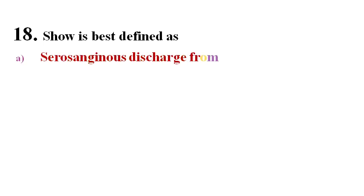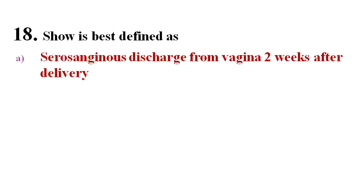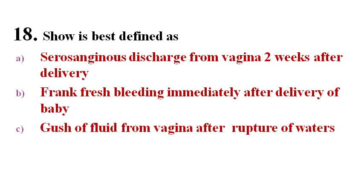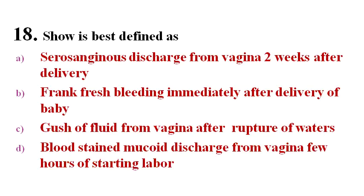Next question: Show is best defined as? Options A. Serosanguinous discharge from vagina two weeks after delivery, B. Frank fresh bleeding immediately after delivery of baby, C. Gush of fluid from vagina after rupture of membrane, D. Bloodstained mucoid discharge from vagina few hours of starting labor.